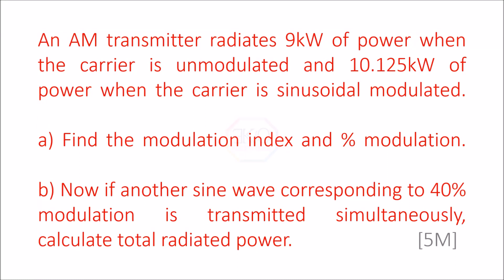In this video we're going to solve a problem related to AM transmitters. An AM transmitter radiates 9 kilowatt of power when the carrier is unmodulated and 10.125 kilowatt of power when the carrier is sinusoidally modulated. Find the modulation index and percentage modulation. If another sine wave corresponding to 40% modulation is transmitted simultaneously, calculate the total radiated power.